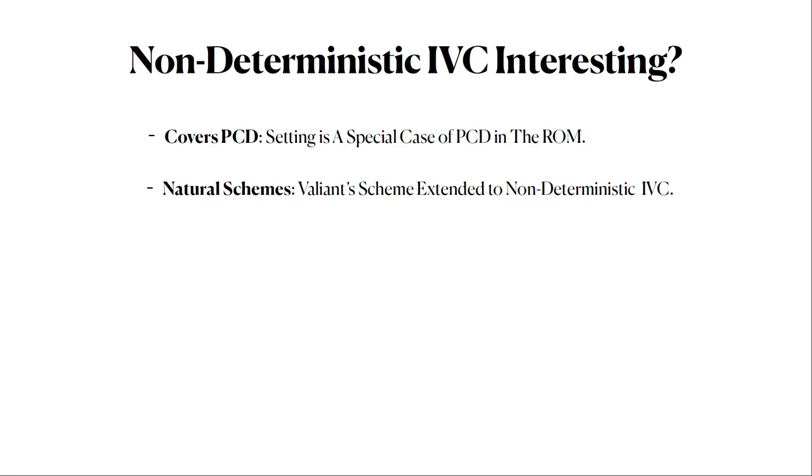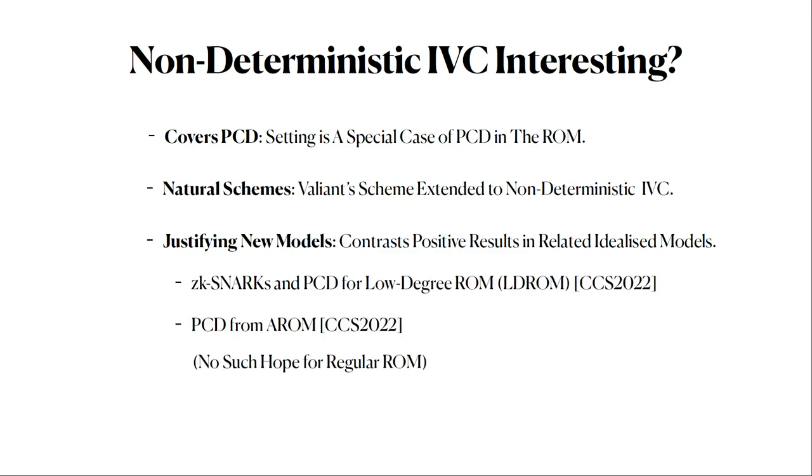It covers PCD. PCD is a special case. Natural schemes can be extended. Valiant's scheme, in particular, can be extended to non-deterministic IVC. It also justifies many of these new models for random oracles, for instance, this low-degree ROM as well as the AROM. We can construct SNARKs for all of NP in the ROM. But building non-deterministic IVC is harder.